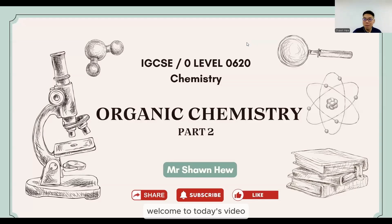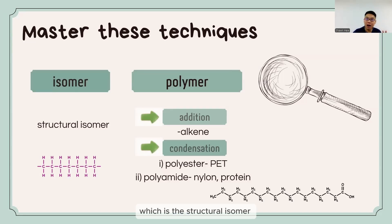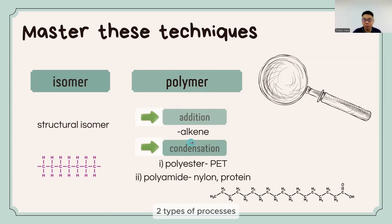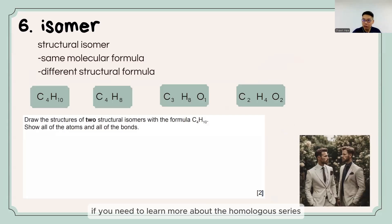Hello ladies and gentlemen, welcome to today's video. Today we will focus on organic chemistry part 2. Part 2 will focus on the structural isomer and also the polymer, which includes addition and condensation — two types of processes. First we go to isomers. If you need to learn more about the homologous series, please feel free to go to my previous video.